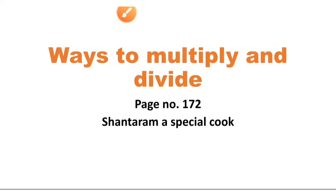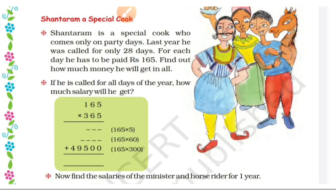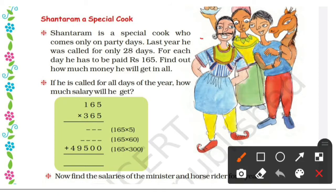Ways to multiply and divide, page number 172. Shantaram is a special cook who comes only on party days. Last year he was called for only 28 days. For each day he has to be paid 165 rupees. Find out how much money he will get in all. Shantaram is a special cook and he is called on party days.